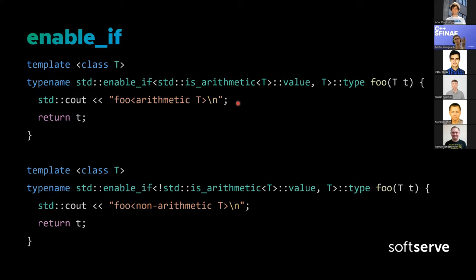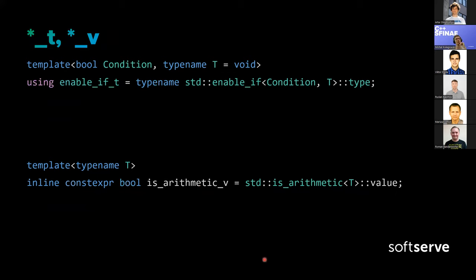This is kind of long and not very readable. So let's move on to underscore _t and _v. In C++14 we got the _t suffix, which is basically just a 'using' alias for enable_if<...>::type. It also takes a condition and typename T with default void, and just passes those template parameters to std::enable_if — letting us omit writing '::type'. It's a little bit fewer characters on screen.